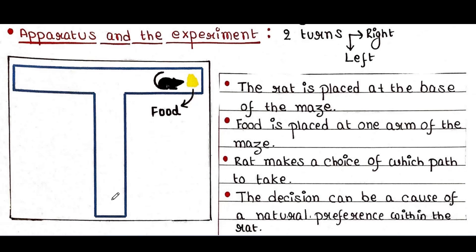The decision made by the rat can be a result of a natural preference within the rat. That means if it can sense the food, it will turn right.